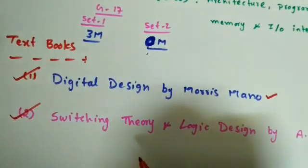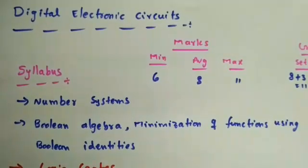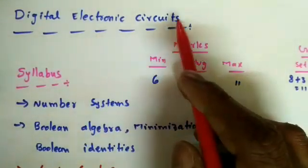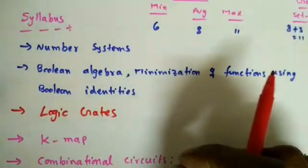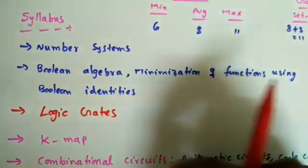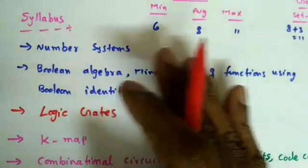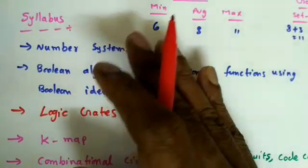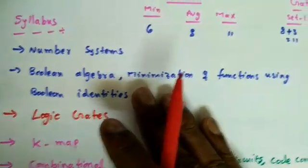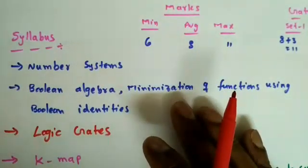I will cover digital electronic circuits in parallel with electronic devices, because number systems, Boolean algebra, and logic gates require only a small understanding of transistors or diodes. Digital electronics is a relatively easy subject, so we can get marks from it even without studying electronic devices and circuits in depth first. That's why we'll cover both subjects in parallel.